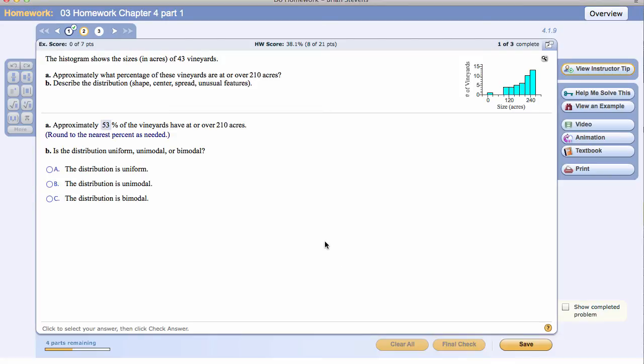Bimodal was what we saw in the previous problem where there's two clear peaks. Where there's a valley between the two. Now, let's go ahead and decide that it is unimodal.